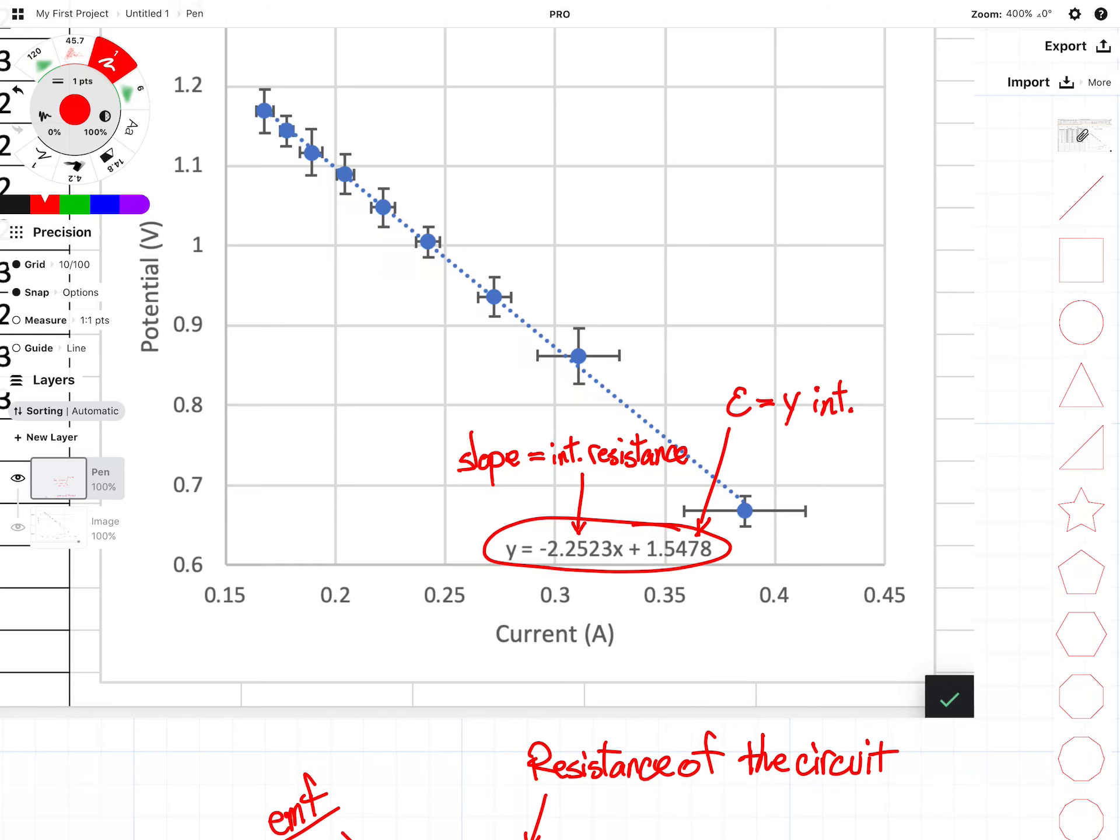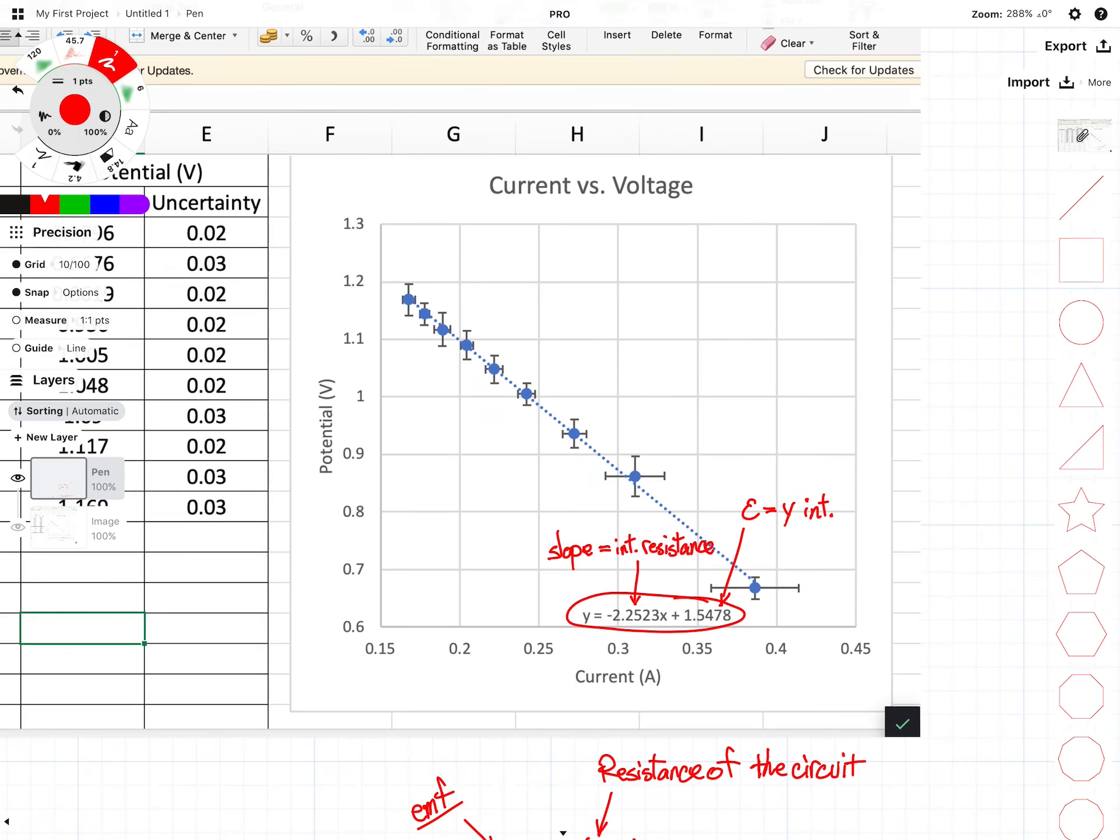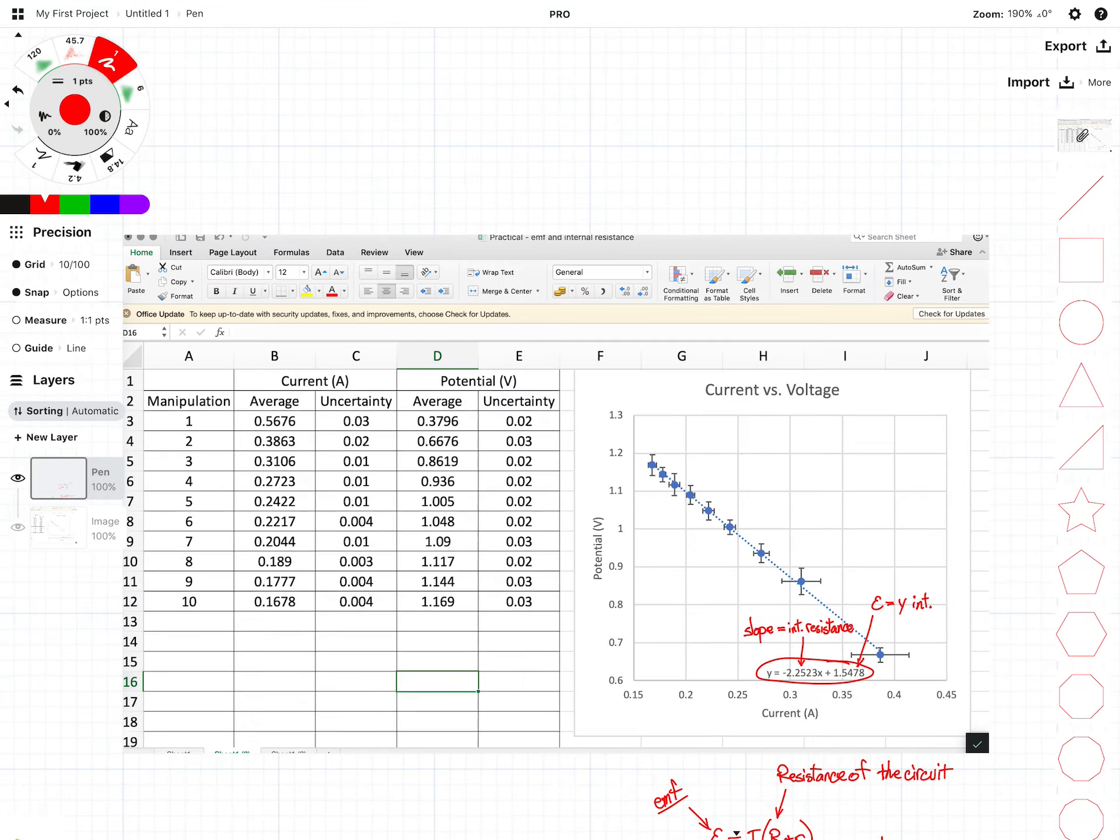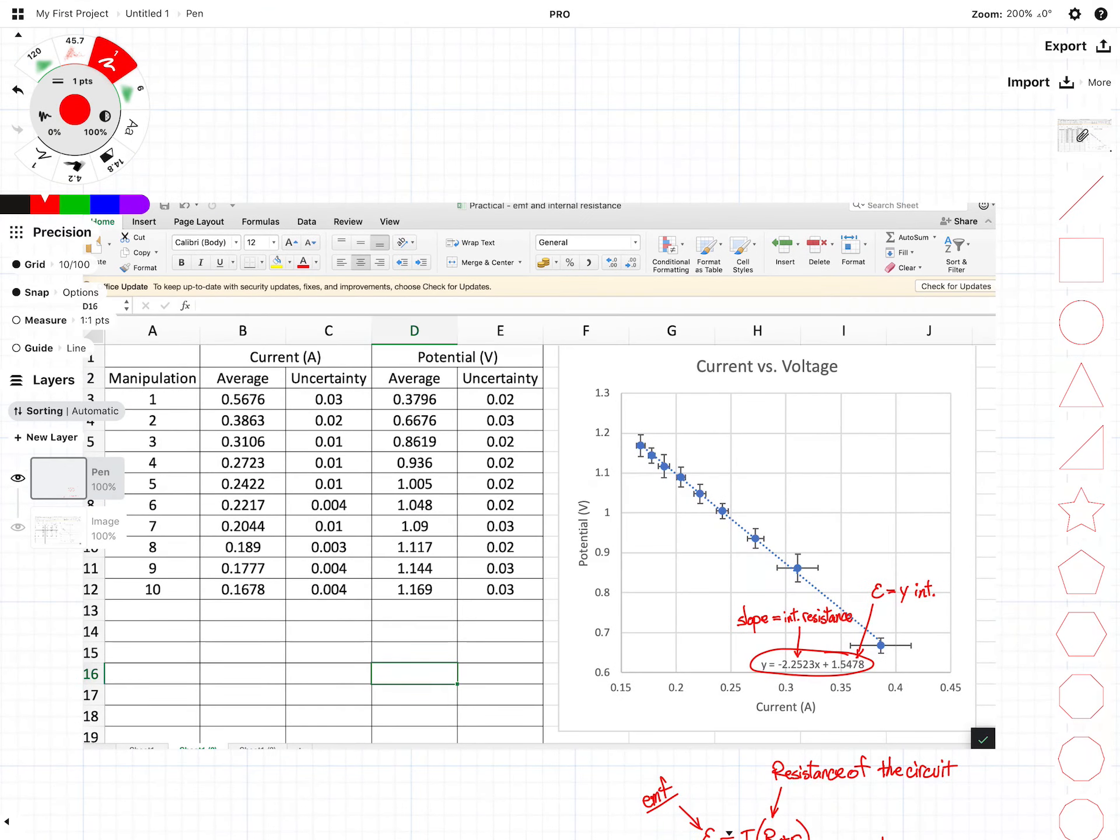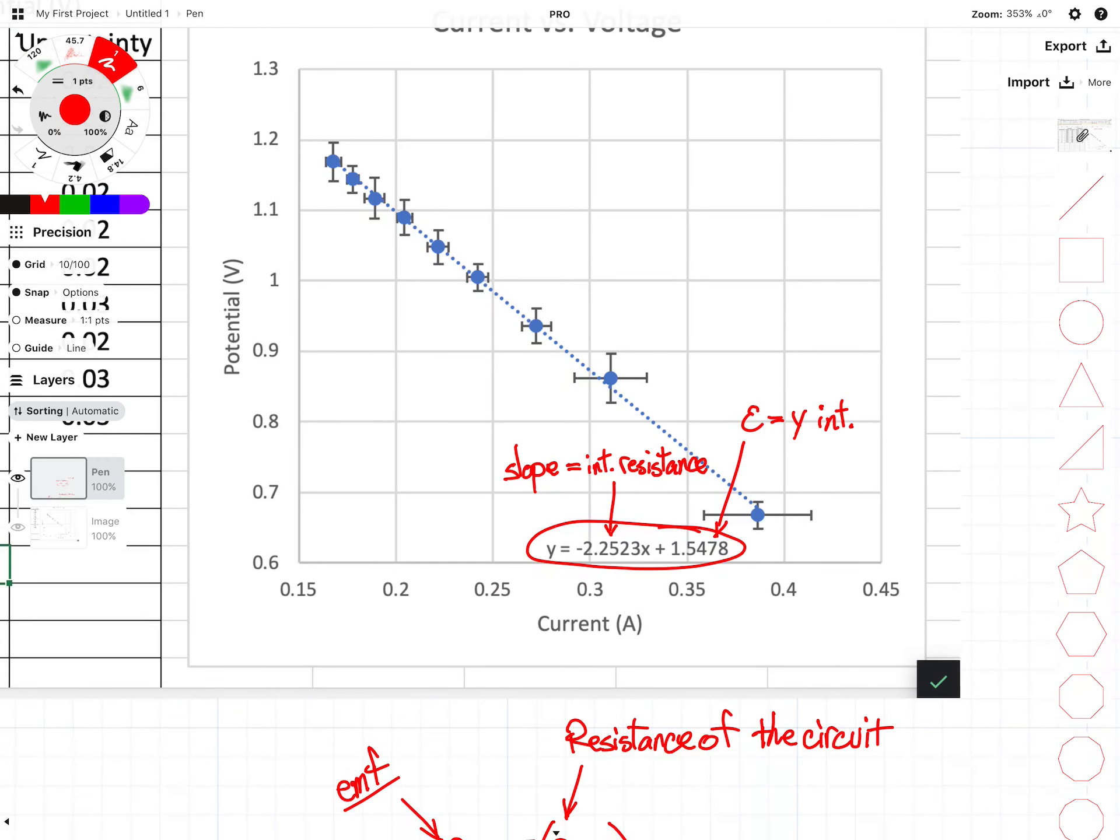And there you go, that is how you get internal resistance and emf from a current versus voltage graph. You need to know this information - it commonly pops up on paper three style questions, so it's pretty important for test purposes. Hopefully that all makes sense. If it does not, please don't hesitate to ask me questions. And as always, make sure you practice some problems and kind of wrap your head around it. Have a great day guys, I'll talk to you later.